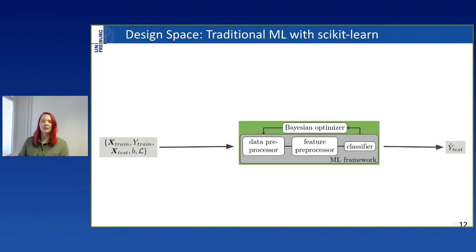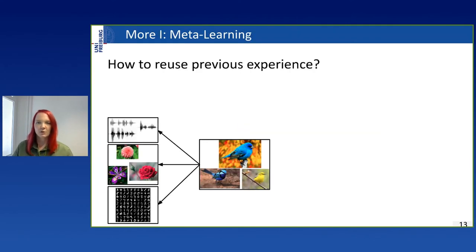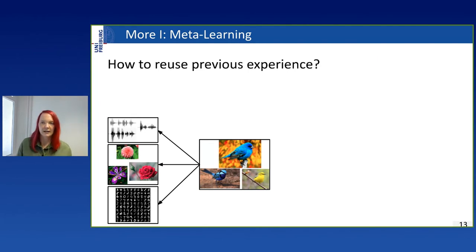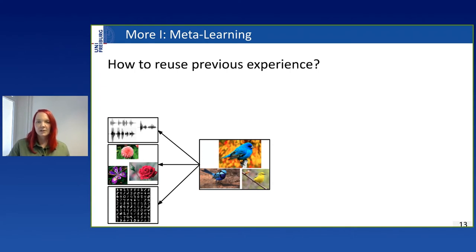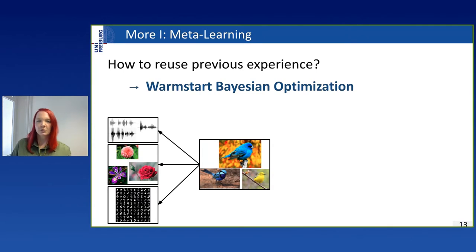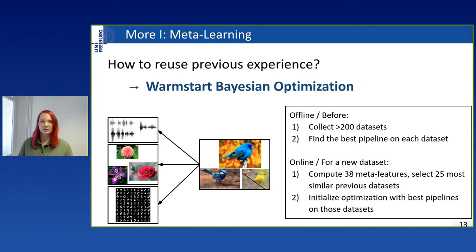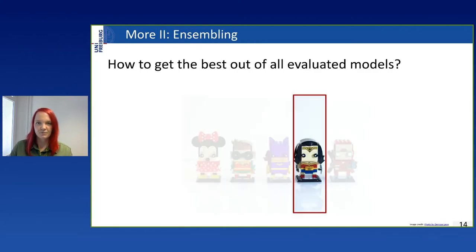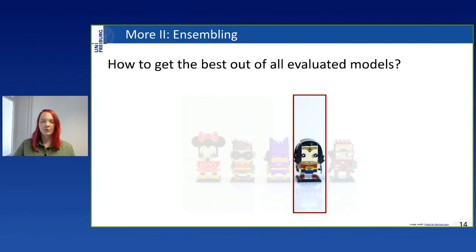Combining Bayesian optimization with our pipeline, we get a very vanilla version of AutoSkLearn. While this works, it's not very efficient, so we added many things to speed it up. The first was meta-learning: we have a lot of data from previous experiments run over and over on datasets, and we want to reuse that experience so that for a new dataset we don't have to start from scratch. We collected many datasets, searched for a good configuration on each, and for a new dataset compute the distance to datasets in our database, then warm-start Bayesian optimization with the best performing configurations. The second improvement: simply returning only the best model is a waste of resources. It's well known that a team of models performs much better, so we construct ensembles.